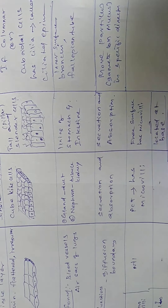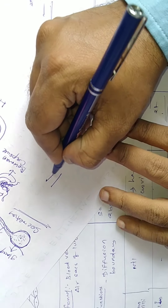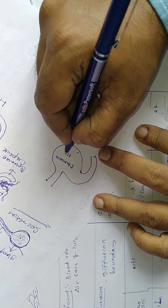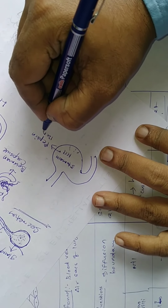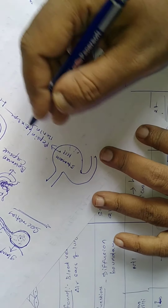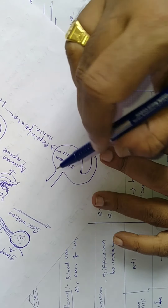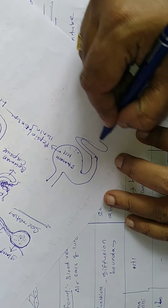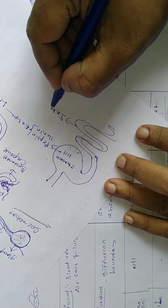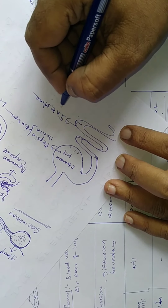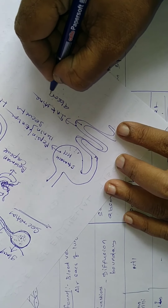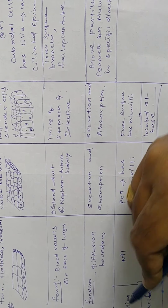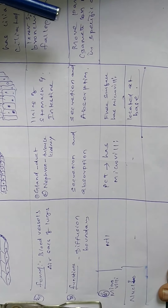The function of columnar epithelial tissue is secretion and absorption, because it is present in the stomach and intestine. Inside the stomach, HCl, pepsin, and renin — these enzymes are secreted. So the inner wall of the stomach, having columnar epithelial tissue, is responsible for secretory function. Inside the intestine, it acts as an absorptive function. So: stomach — secretion; intestine — absorption. Both cuboidal epithelium and columnar epithelium have the fourth point function of secretion and absorption.